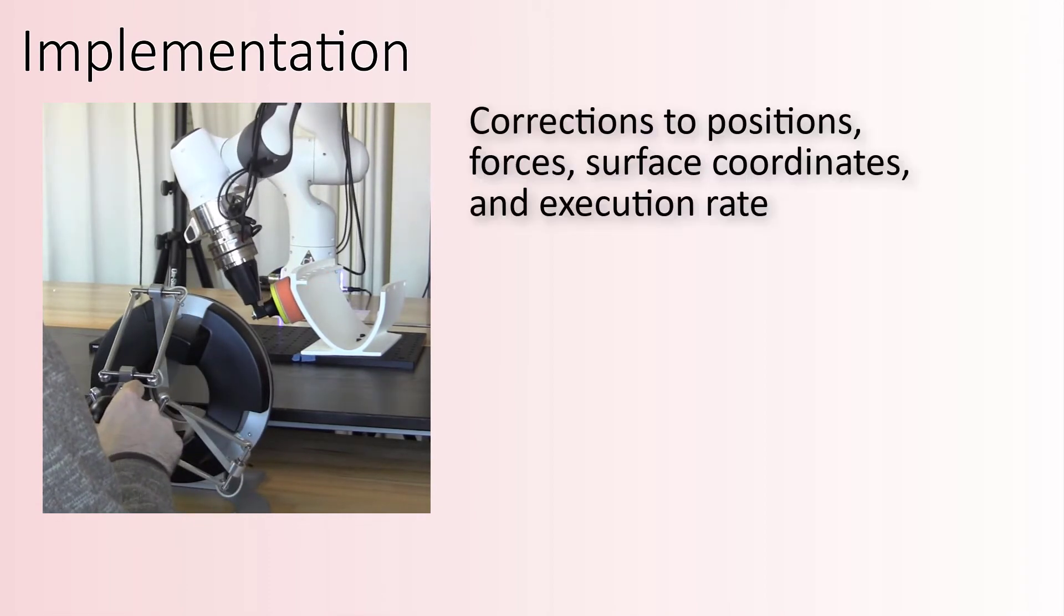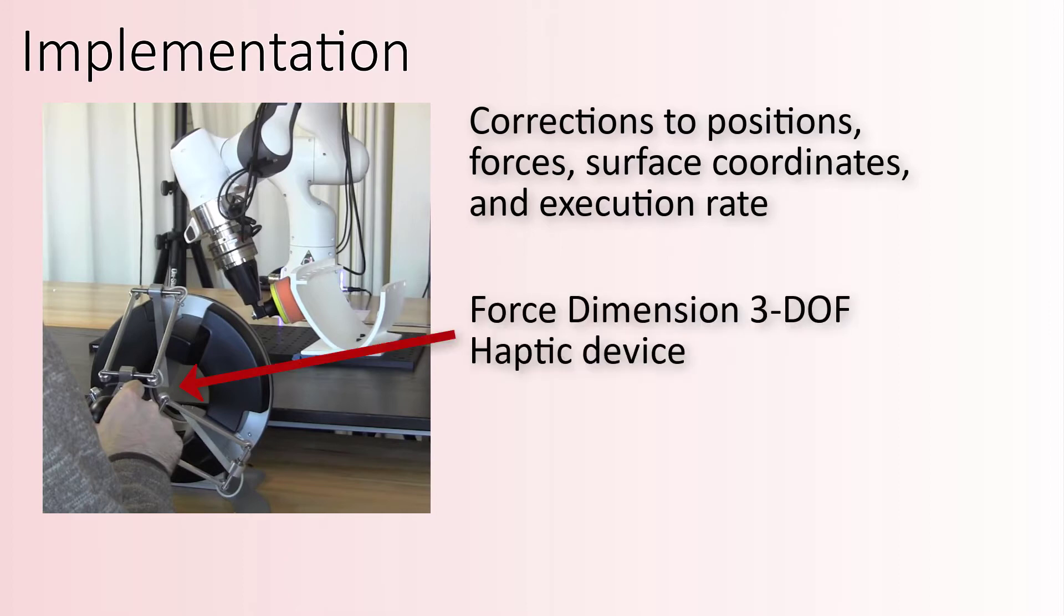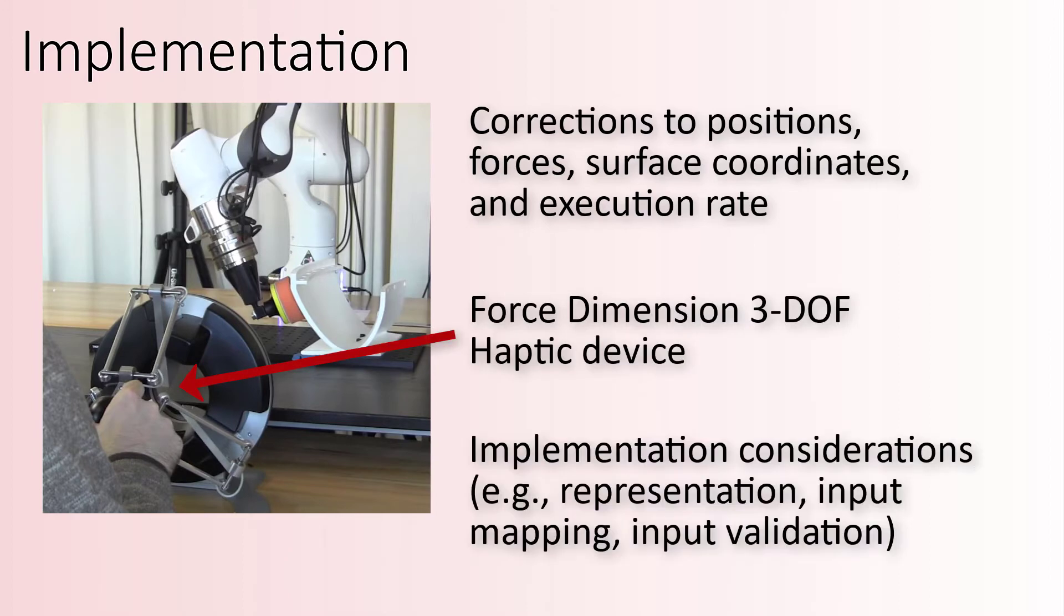We present an implementation focused on tasks involving physical interaction where users can provide corrections to positions, forces, surface coordinates, and execution rate using a 3 degree of freedom haptic device. We also discuss considerations including representation, input mapping, and user input validation.